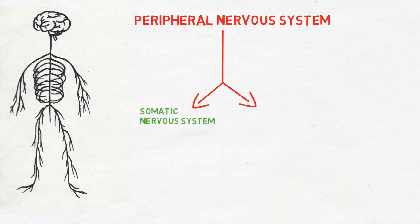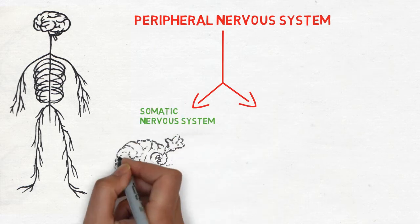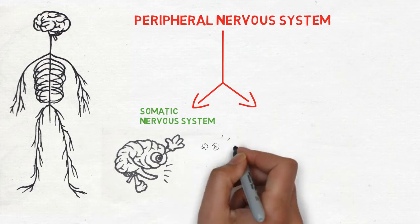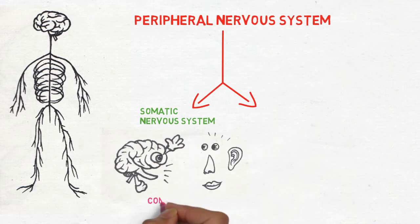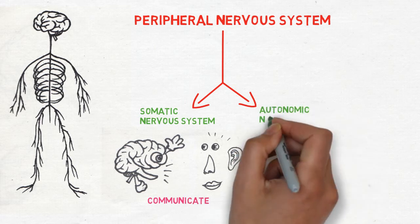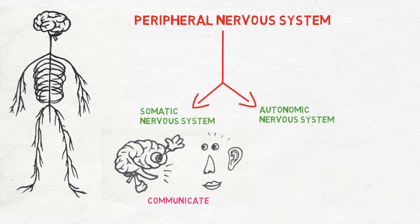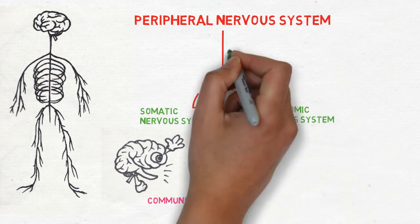The somatic nervous system allows the brain and the spinal cord to communicate with the sensory system and control the muscles and glands of the body. The autonomic nervous system is divided into sympathetic and parasympathetic nervous systems.